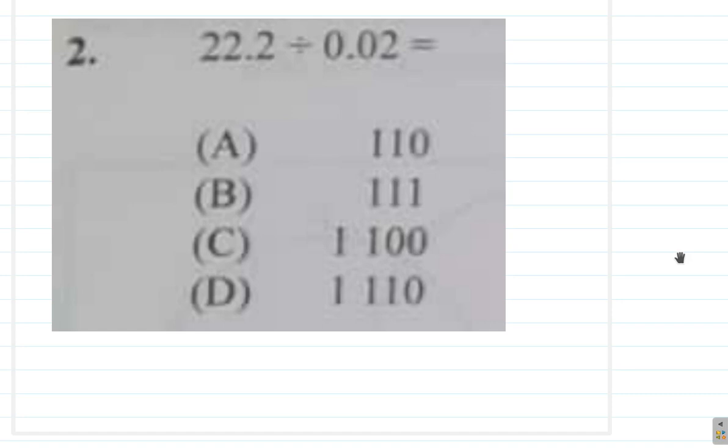Question 2. 22.2 divided by 0.02 is equal to. So it says 22.2 divided by 0.02 equal.